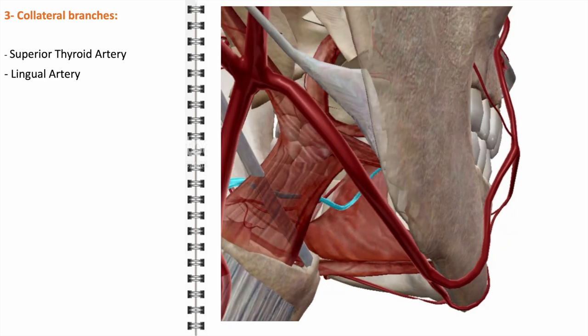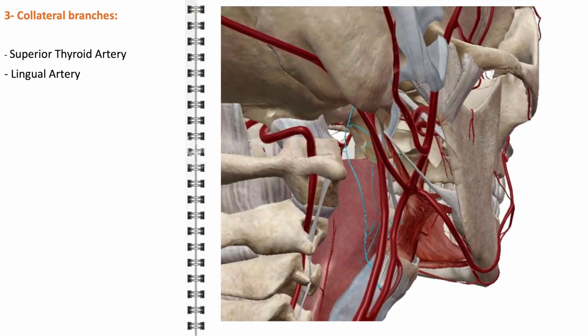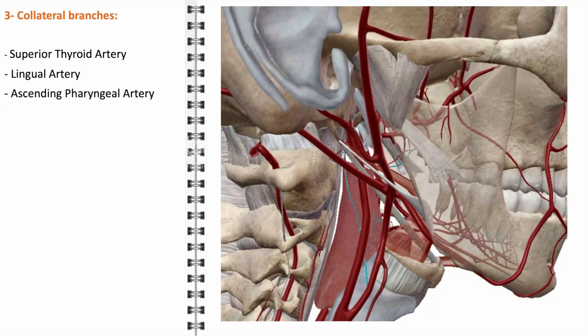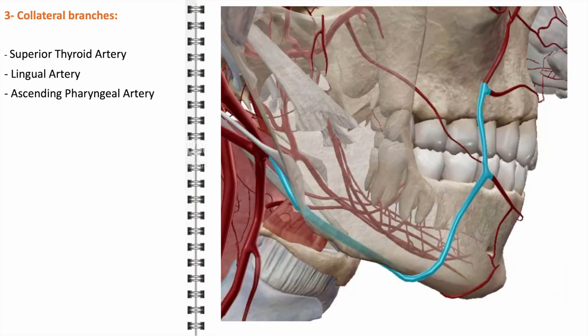The ascending pharyngeal artery, often described as the most medial branch, is a small artery that supplies the pharynx, prevertebral muscles, the cranial part of the sympathetic trunk, and parts of the middle and inner ear. The facial artery, a major artery that curves around the lower border of the mandible and enters the face, supplies blood to the facial skin, muscles of facial expression, and some areas of the oral cavity.